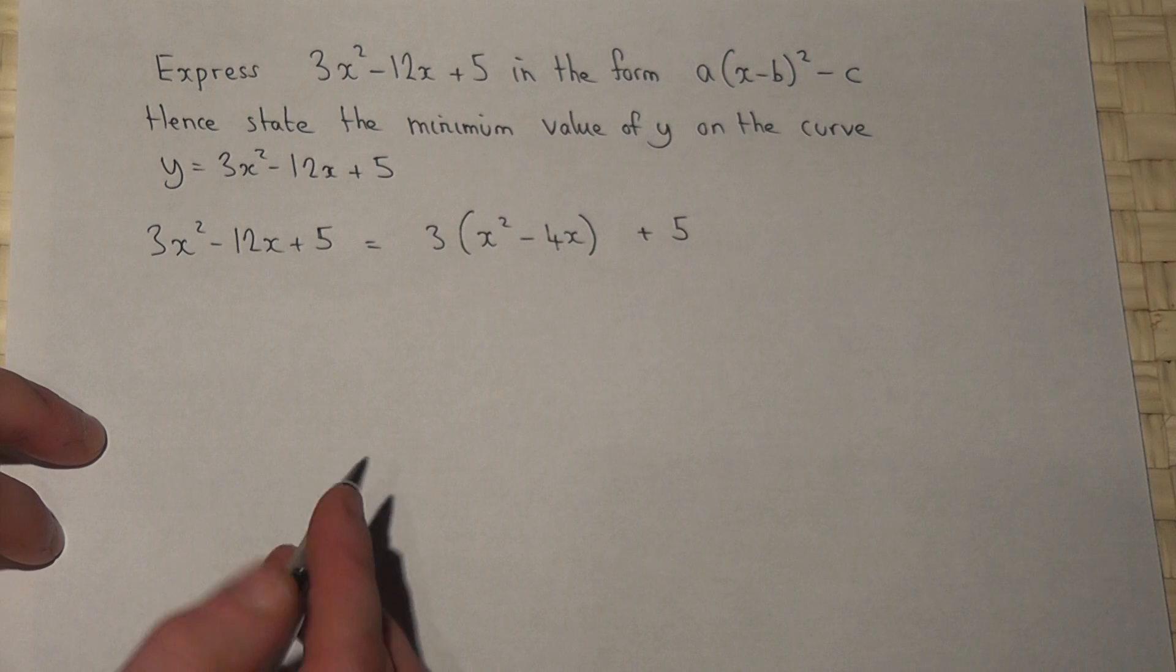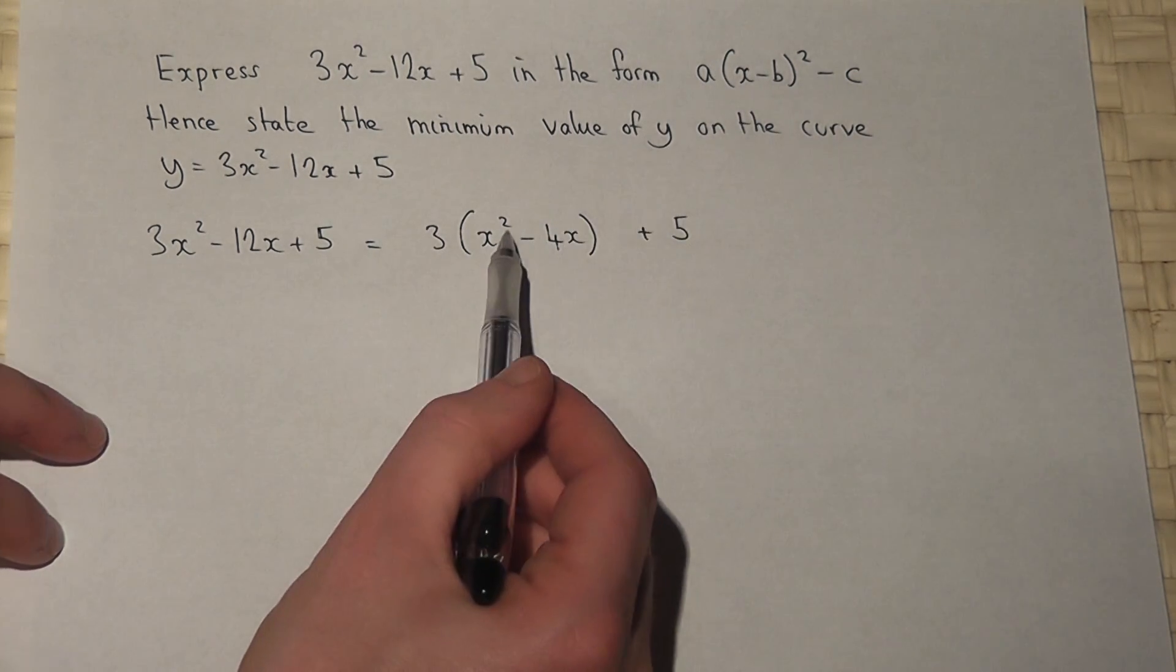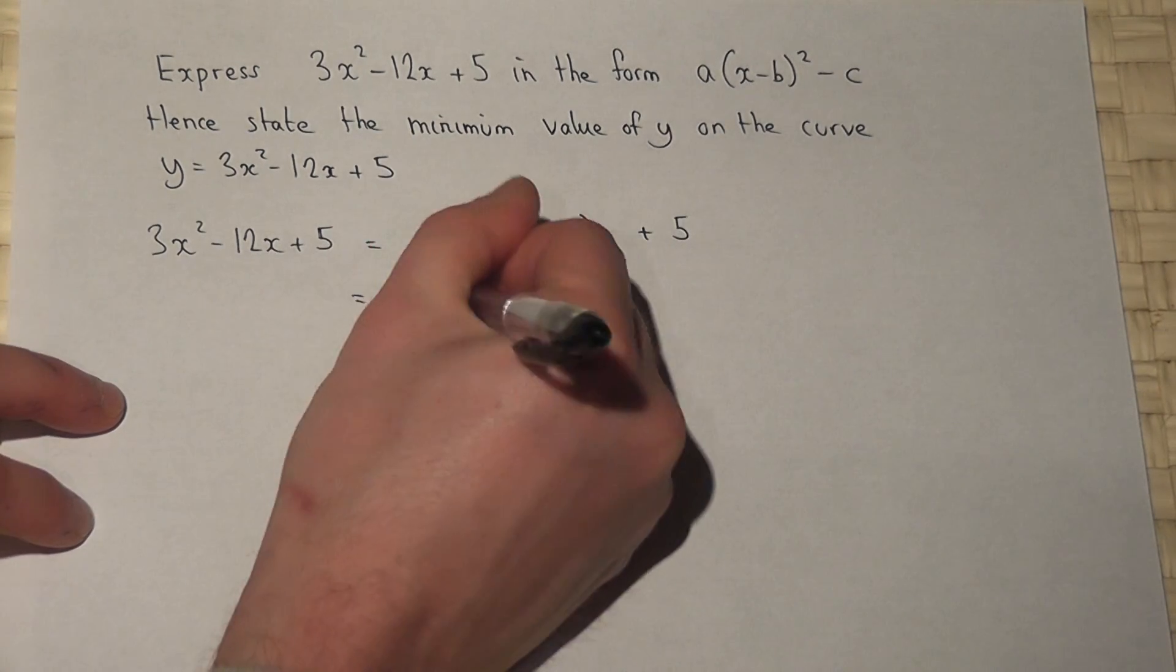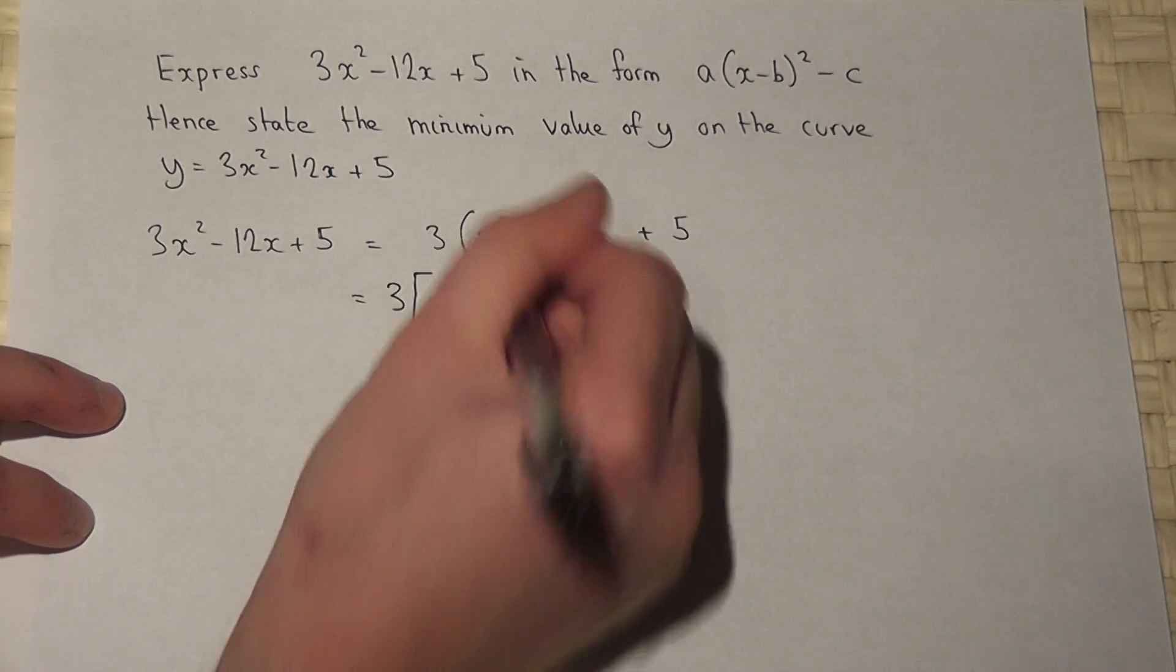I will now complete the square on x squared, take away 4x. So 3, big square brackets to make it simpler.